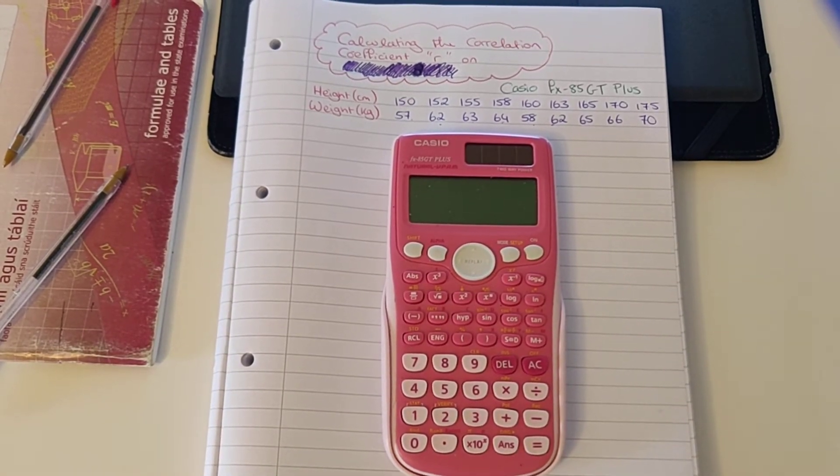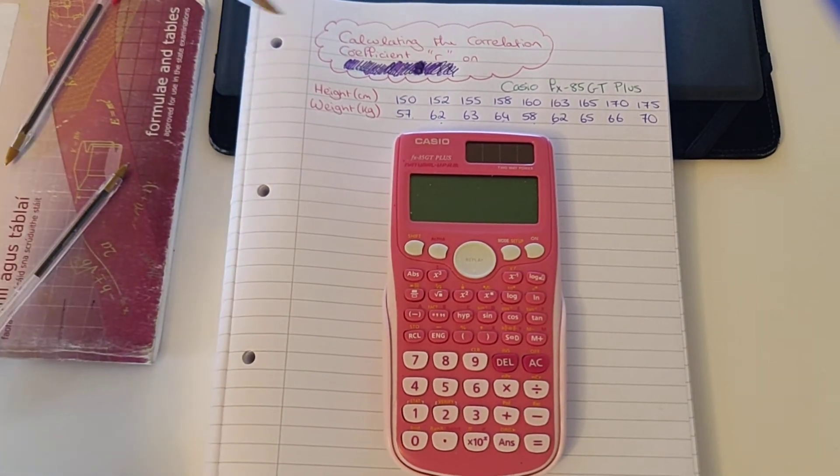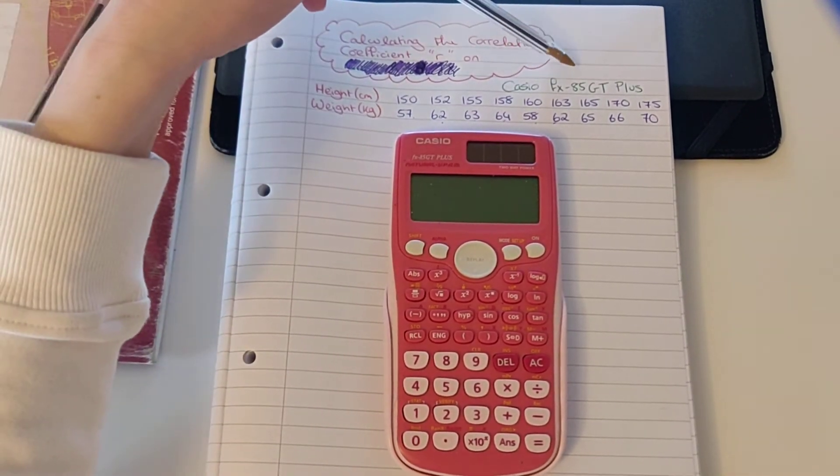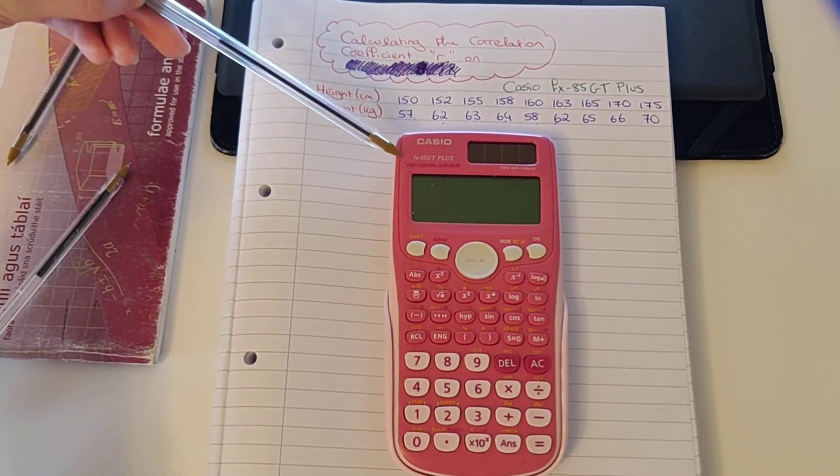Morning everyone, and what we're going to be looking at today is how to calculate our correlation coefficient R on the Casio FX85GT+, the older style version of the Casio calculators.